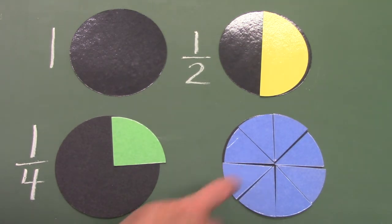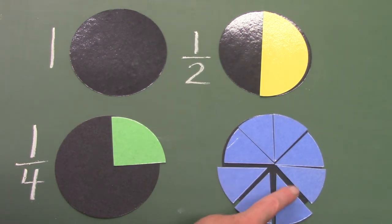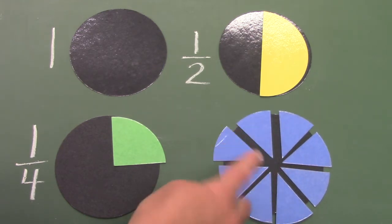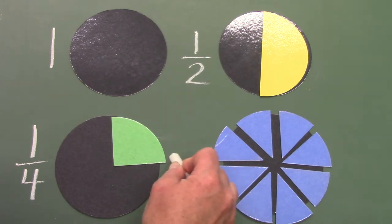How many pieces are covering this circle? We might need to count this. One, two, three, four, five, six, seven, eight. There are eight pieces for one whole circle.